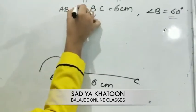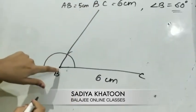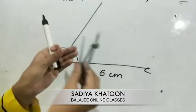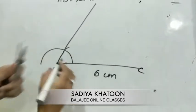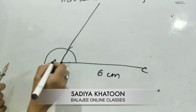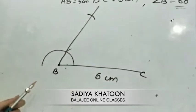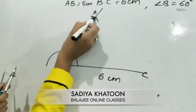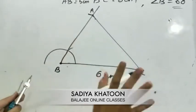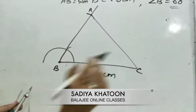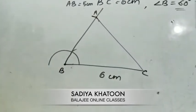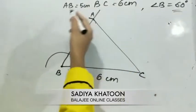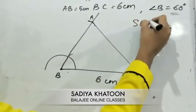You put the compass needle at the 60-degree ray, measure the required AB length in the compass, and cut an arc. Where the arc is cut, that is point A. Now simply join A to C. You do not need to worry about any other length or angle at this stage — your triangle is complete.